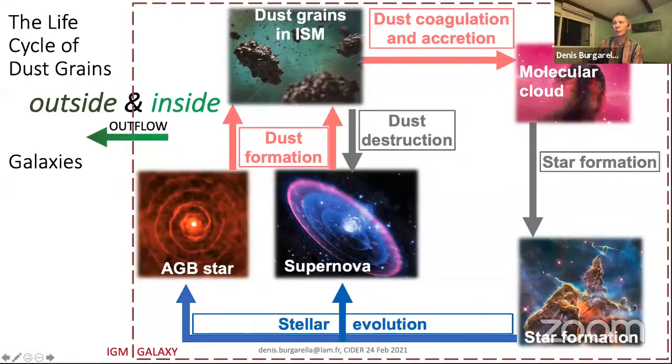To summarize, when we have star formation and stellar evolution, we know that supernovae and AGB stars can produce dust. This dust goes into the ISM, which can be destroyed by supernovae, but you can also have dust coagulation and accretion in the interstellar medium, which will later go into new star formation. This happens in galaxies, but you also have outflows.